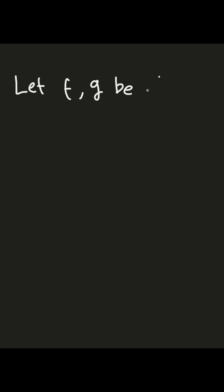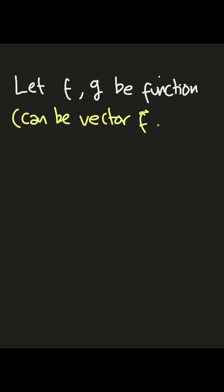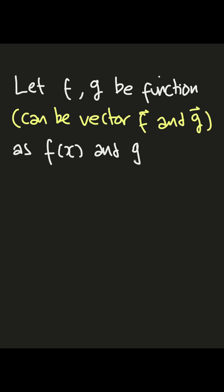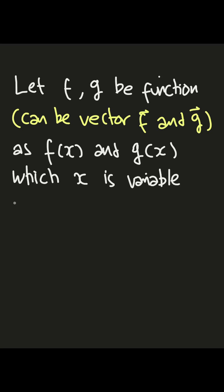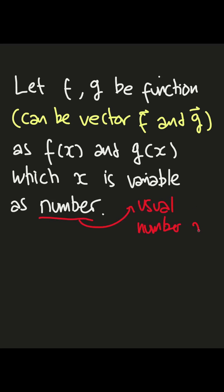Let f and g be functions — which can be vector or another algebraic object — as f(x) and g(x), where x is a variable as a usual number, such as pi, 1, e, or many other numbers.